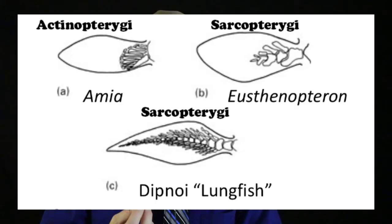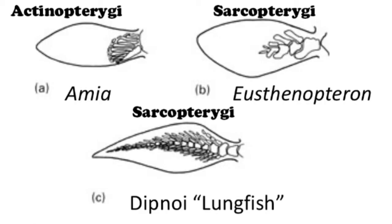The major difference between these two groups is in the structure of the pectoral fins. In Actinopterygians, the fin is composed of a radial ray of bony ossifications to support the fin. While in the lobe fin Sarcopterygians, the fin contains a discrete set of bones, either paired or along the axis of the fin.